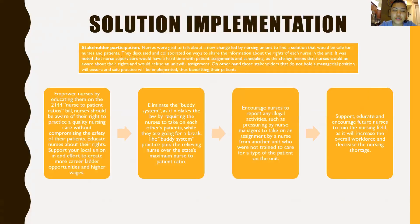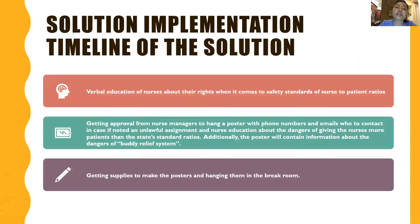Another solution implementation would be to encourage nurses to report any illegal activities, such as being pressured by nurse managers to take on additional assignments, or having nurses from another unit who are not trained to care for that type of patient assigned to the unit — which is also unlawful. Additionally, the next solution implementation would be to support, educate, and encourage future nurses to join the nursing field, which will increase the overall workforce and decrease the nursing shortage.